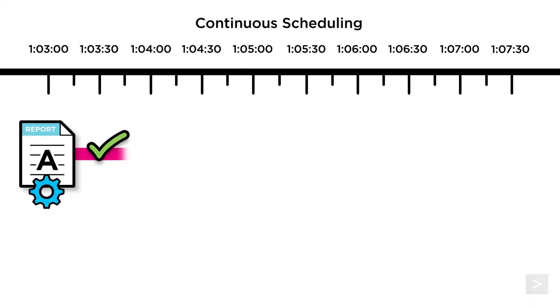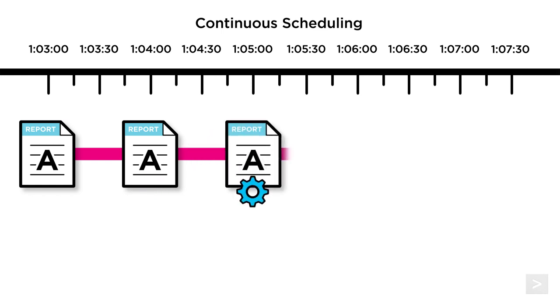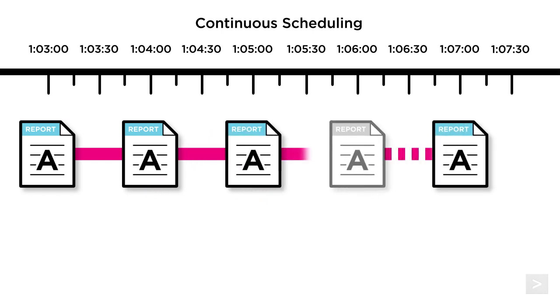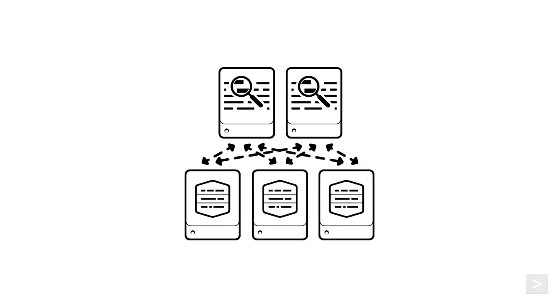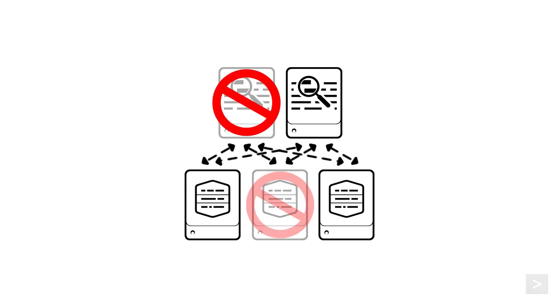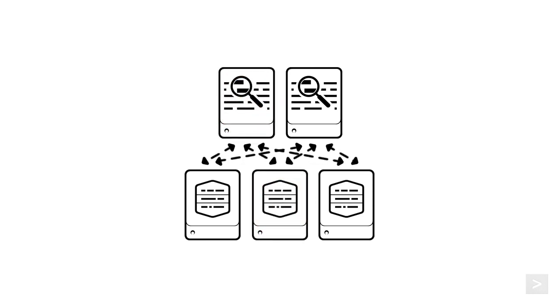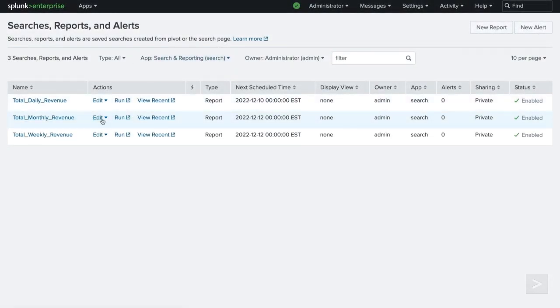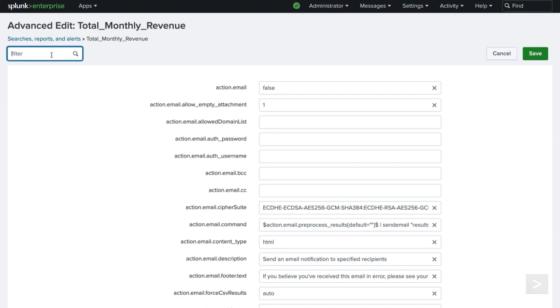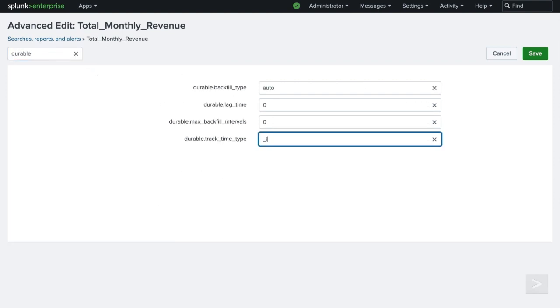Continuous Scheduling is one of two ways to prevent missing results from your scheduled reports. The Continuous Scheduling Mode tries to ensure that every scheduled run of a report is eventually performed. However, it cannot help with data outages that occur when search heads and search peers go offline for periods of time. It also cannot help with scheduled search runs that return incomplete result sets. To guard scheduled reports against such situations, we can set them up with Durable Search Processing, which uses backfill searches to replace data lost.